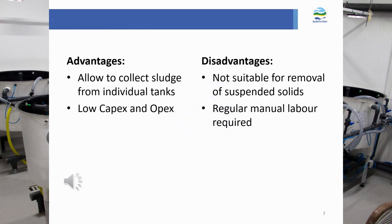The advantages of the swirl separator are that it allows sludge collection from individual tanks, which is especially useful in nutritional trials. It is relatively cheap, with low investment and operational costs. However, it is not suitable for removing suspended solids, and it requires regular manual labor — the vessels must be cleaned and drained at least once a day under normal operation.